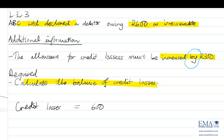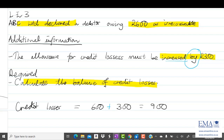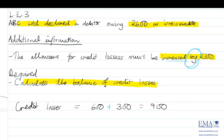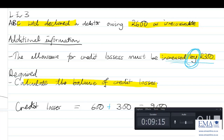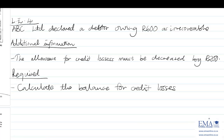Notice the key word 'by' — in the previous two examples the allowance was adjusted 'to' a figure, so we had to calculate the difference. Here it says 'by 300', so we are already given the difference. Since it was increased, that is bad for the business, meaning credit losses go up. So: 600 rand plus 300 rand = 900 rand total credit losses.